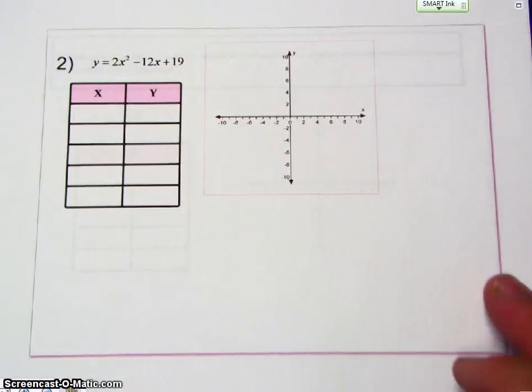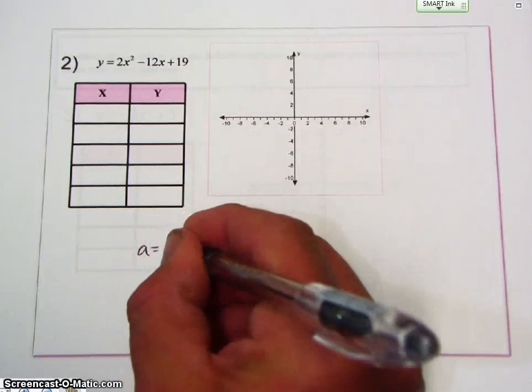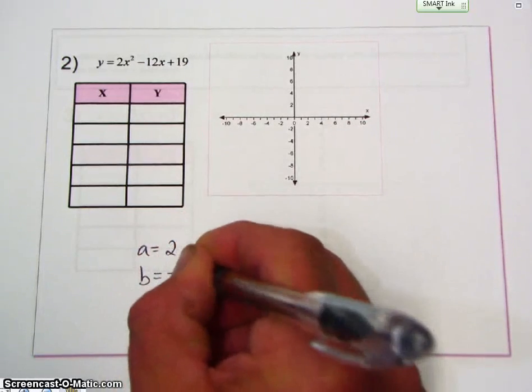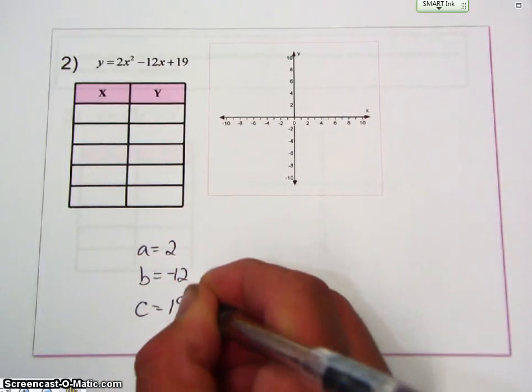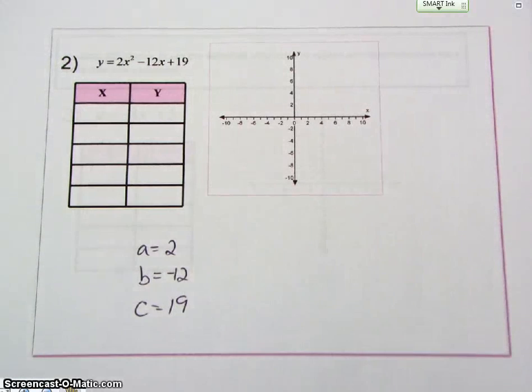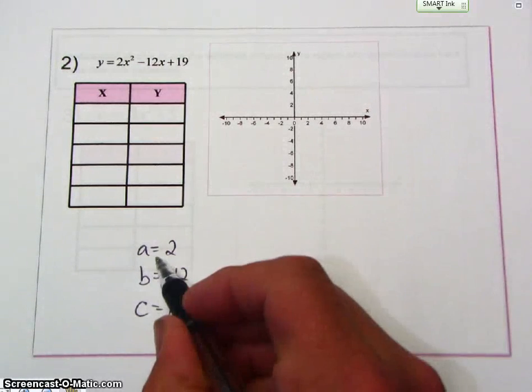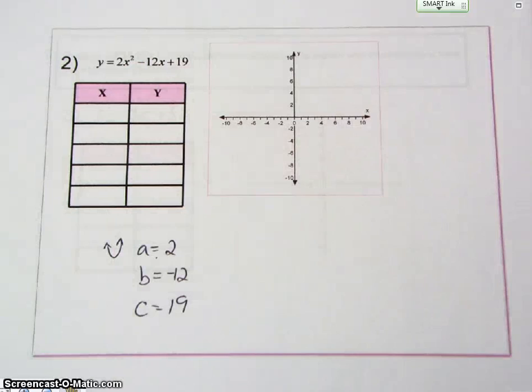Let's try another example. So remember, A is 2, B is negative 12, C is 19. So let's find the vertex. Well, A is positive so I know it's going to open up.